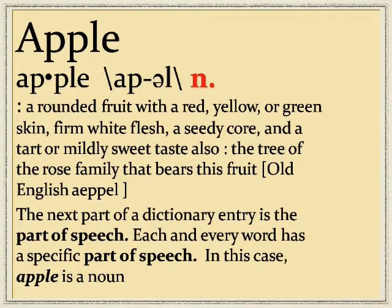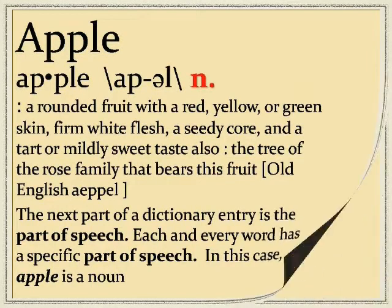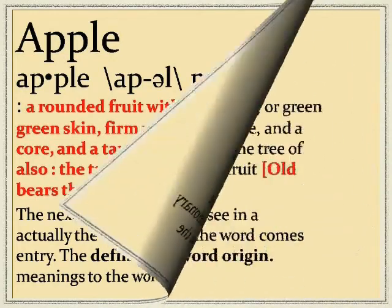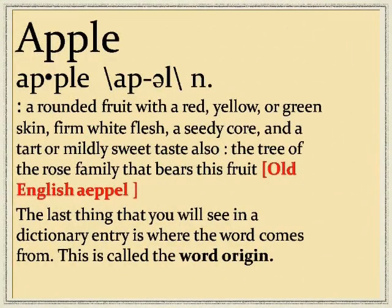The next part of a dictionary entry is the part of speech. Each and every word has a specific part of speech. In this case, apple is a noun. The next set of words are the definitions of the dictionary entry — the meanings of the word. The last thing you will see in a dictionary entry is where the word comes from, which is called the word origin.